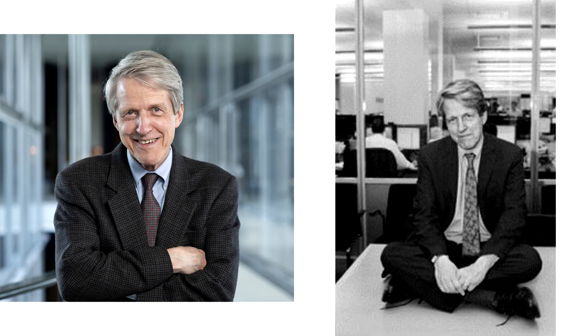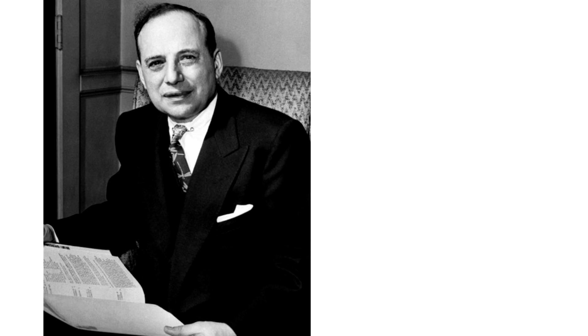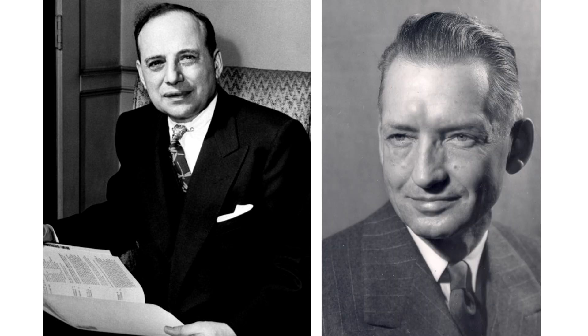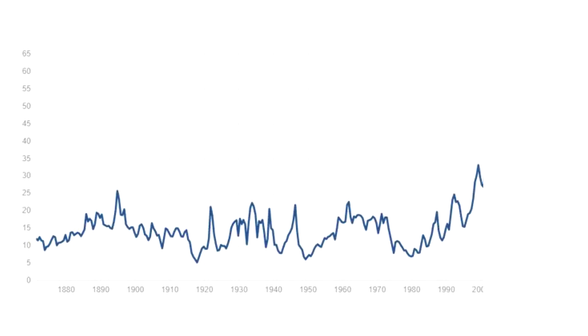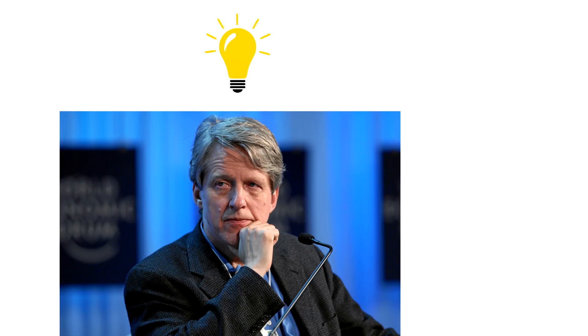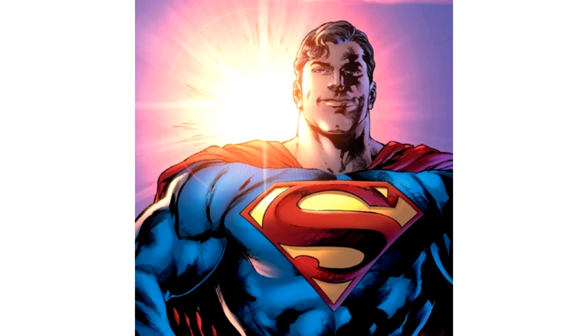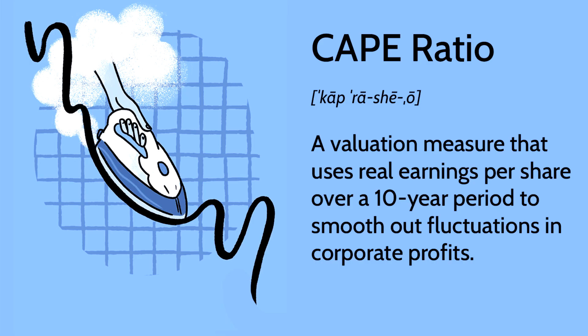The Schiller PE ratio was invented by Robert Schiller during the late 80s in response to two of the forefathers of value investing, Benjamin Graham and David Dodd, who argued that one-year earnings were too volatile to offer an accurate picture of a firm's true financial value. Robert Schiller used this idea to create the Schiller PE ratio, also known as the CAPE ratio. It's very similar to your basic price-to-earnings ratio, except the earnings represent a 10-year moving average that takes inflation into account.